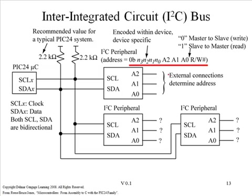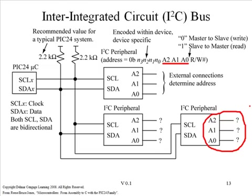The topmost four bits are determined based on the type of device. For example, a serial EEPROM will always have the pattern 1010. The next three bits, labeled A2, A1, and A0, are determined based on the connection of the A2, A1, and A0 pins, which appear on many I2C devices. Finally, the last bit — the read/write bit — will be 1 (true) on a read transaction, and 0 (false) on a write transaction.